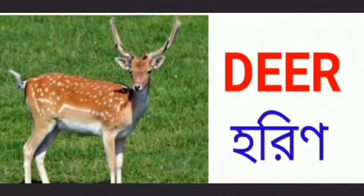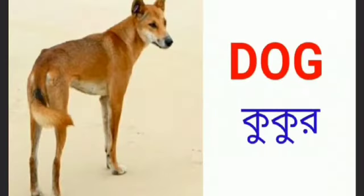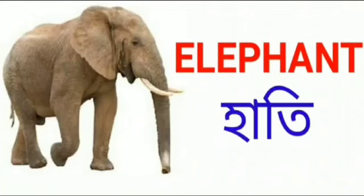Deer — horin. Dog — cuckoo. Elephant — ellipen.